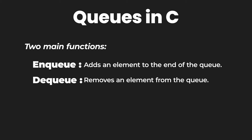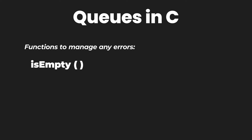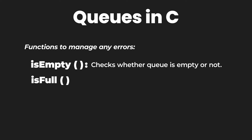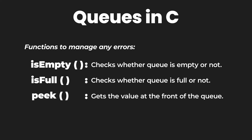When implementing a queue in a programming language, we often include three more functions to help create a program that is not prone to error. These are: is_empty, which checks if the queue is empty; is_full, which checks if the queue is full; and lastly the peek function, which gets the value at the front of the queue.